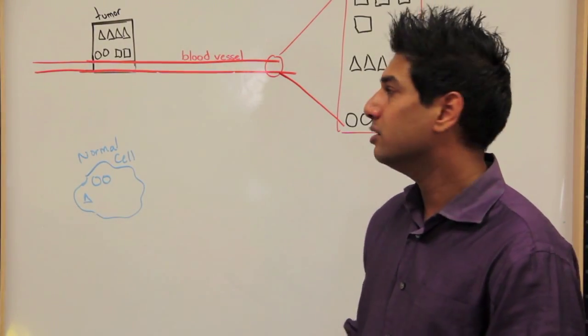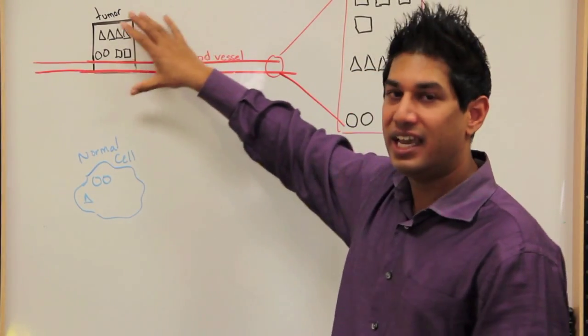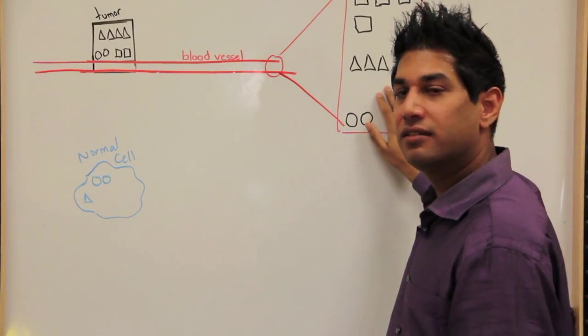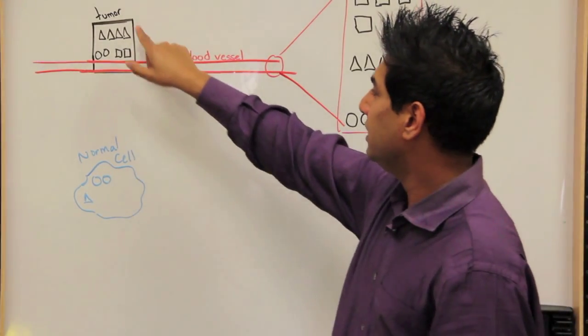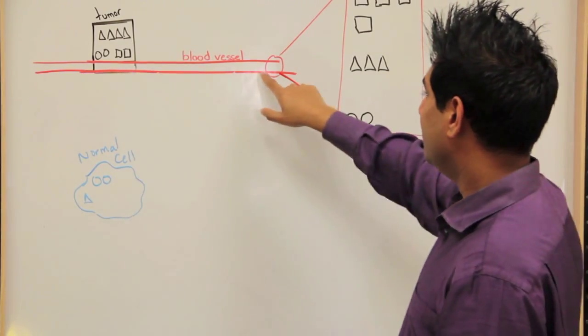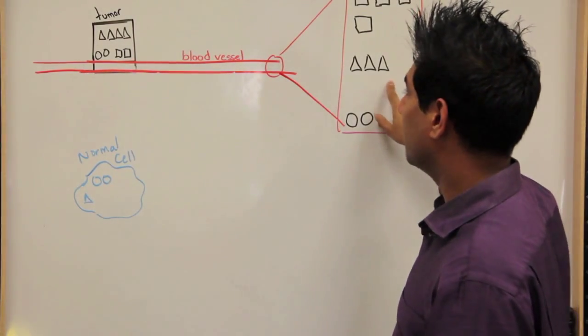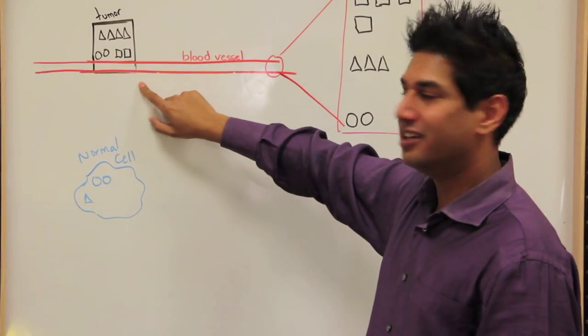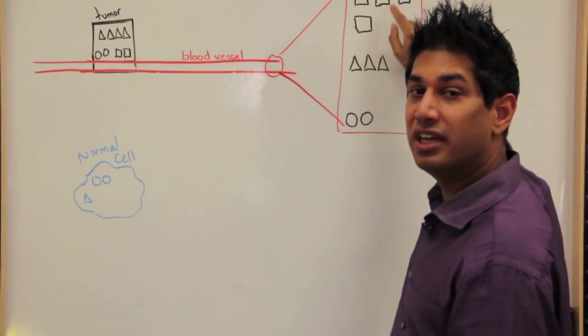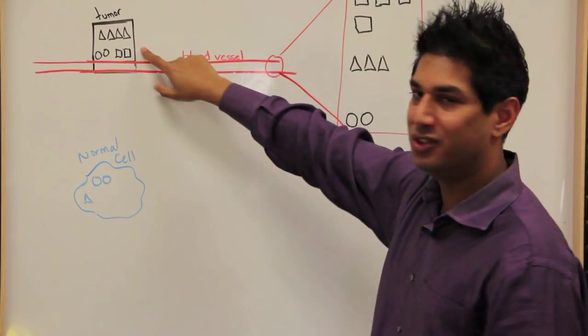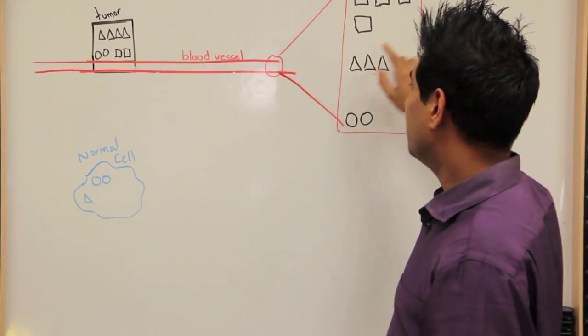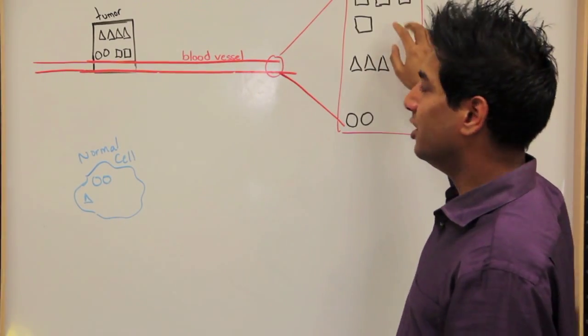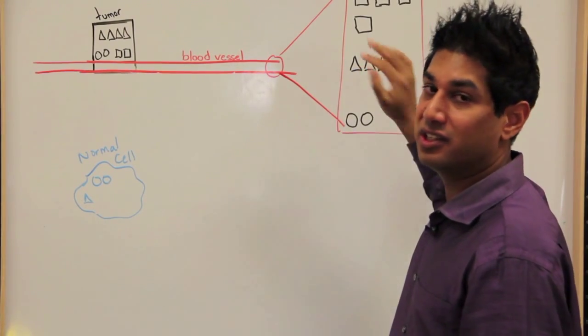So some of these proteins are going to leak out of the tumor and end up in the blood where we can detect them by our blood test. And so if we look, we see that these triangle proteins, they leak out into the blood and we can detect them here. And these square proteins are great because they're very specific. They only exist in the tumor and there's a lot of them in the blood. In fact, there's more of them in the blood than you can see in the tumor. And so what that means is that you'll be able to detect the tumor when it's very small because you have a protein that's very specific and there's a lot of it.